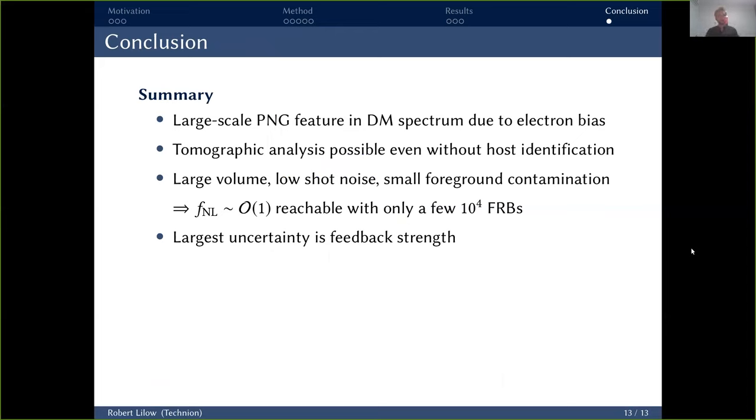And with this, I would like to summarize. I hope I could convince you that there is a large-scale feature caused by primordial non-Gaussianities in the spectrum of dispersion measure. This is caused by the bias of the electrons that the dispersion measure is sensitive to, which is caused by electrons being pushed out of halos due to astrophysical feedback. Secondly, even without having to rely on host identification, tomographic analysis is perfectly possible just based on inverting the relation between observed dispersion measure and redshift. Thirdly, the fact that our FRBs cover a very large volume, have low shot noise, and small foreground contamination means that f_NL of an order of one is reachable with only a few 10,000 FRBs, compared to millions or 10 millions of galaxies needed for a comparable result using galaxy clustering or cosmic shear analyses.